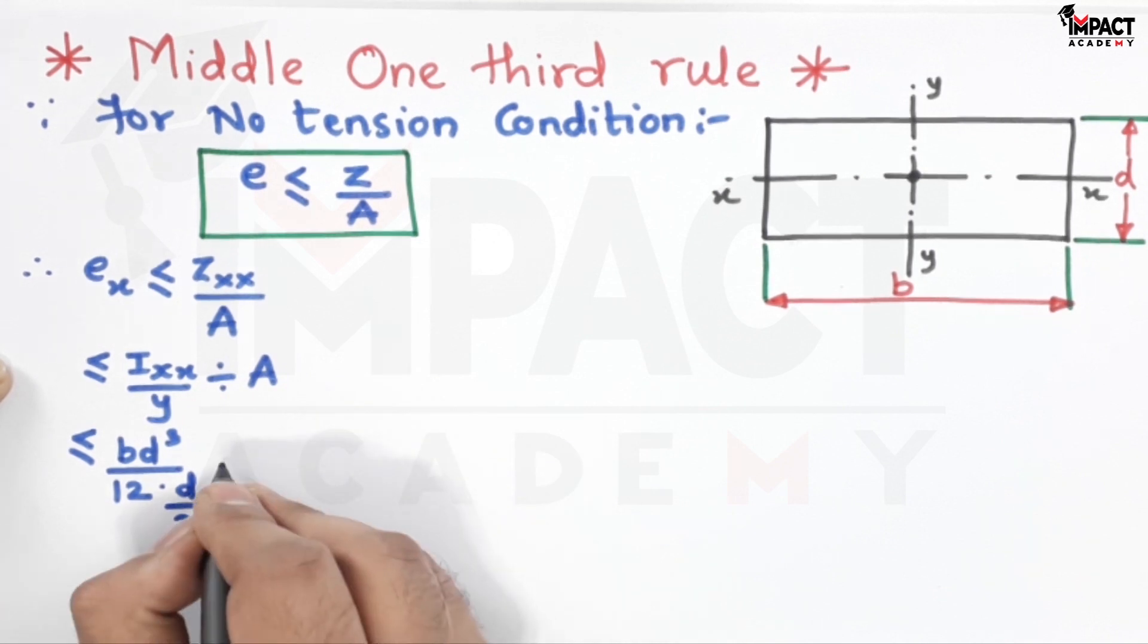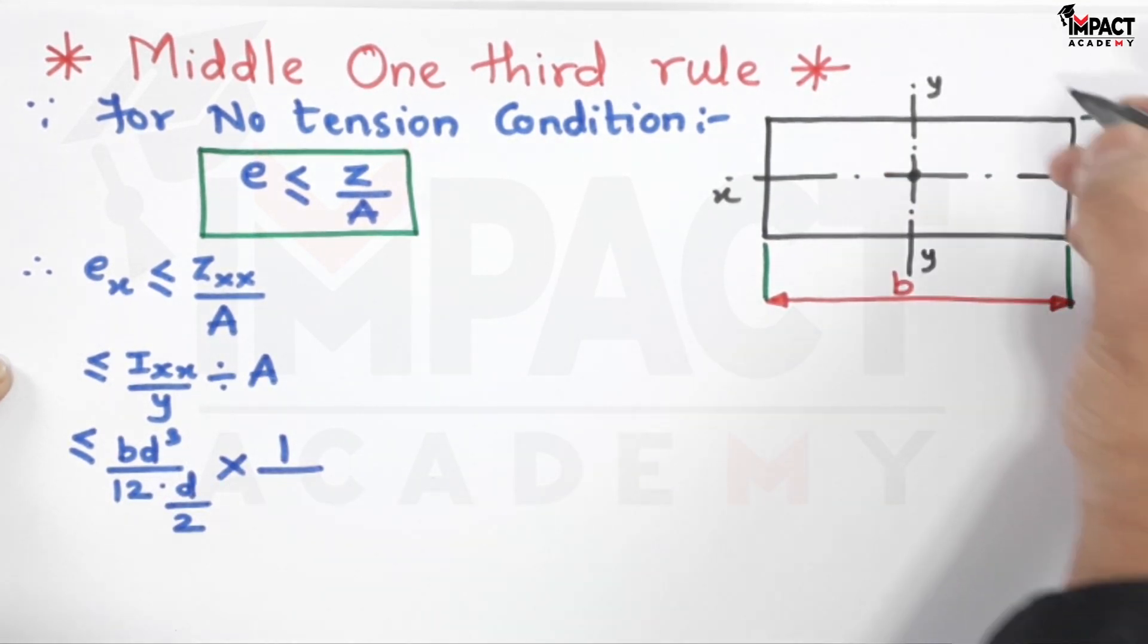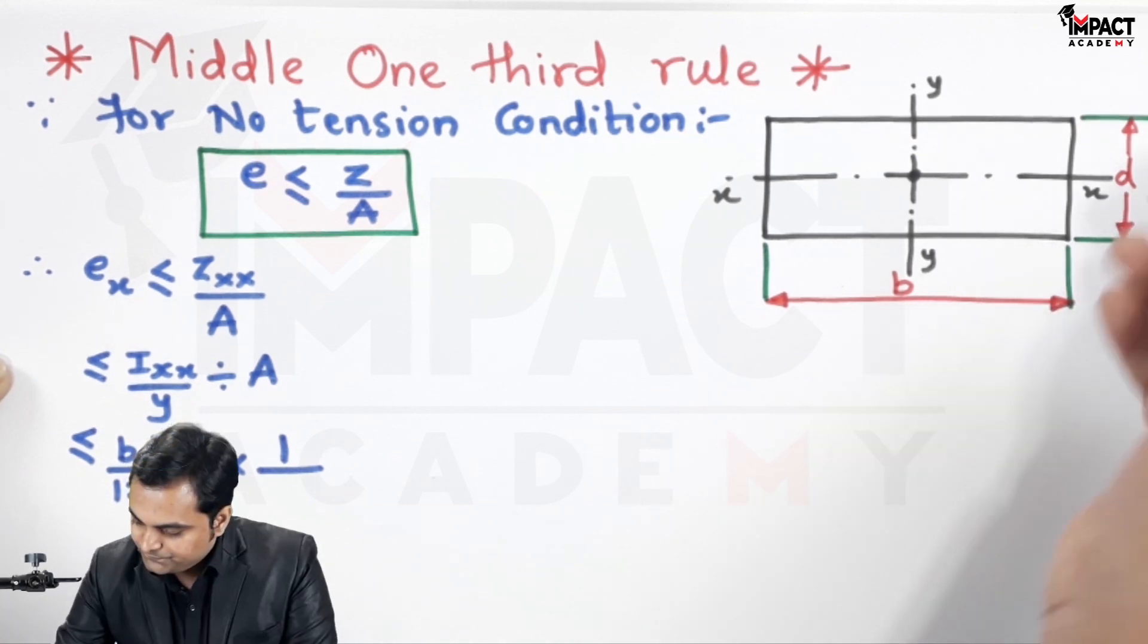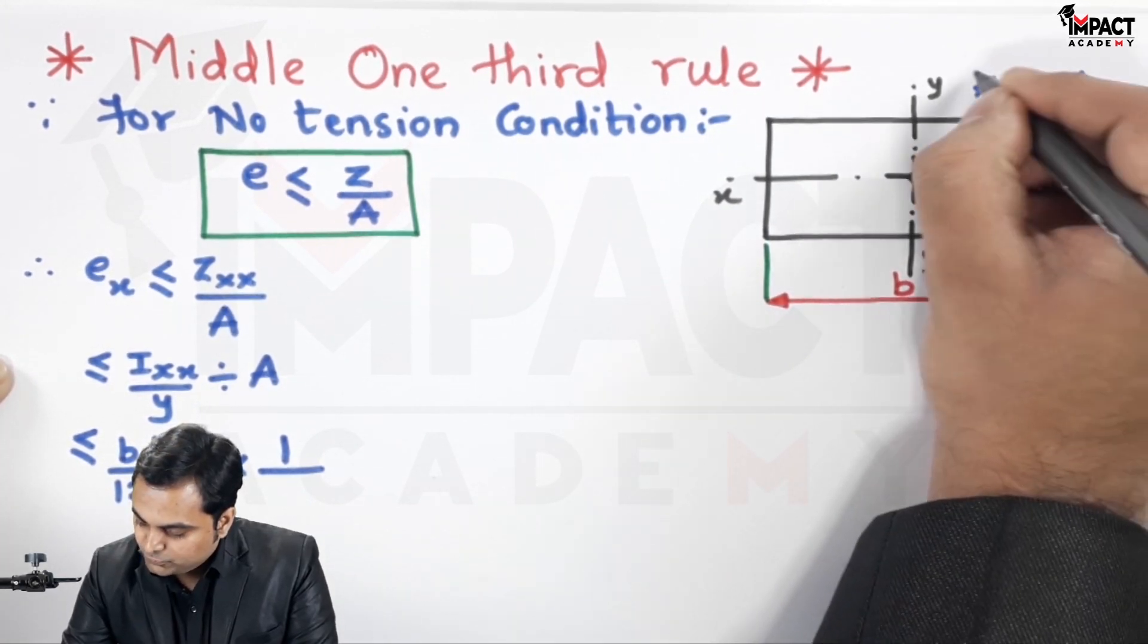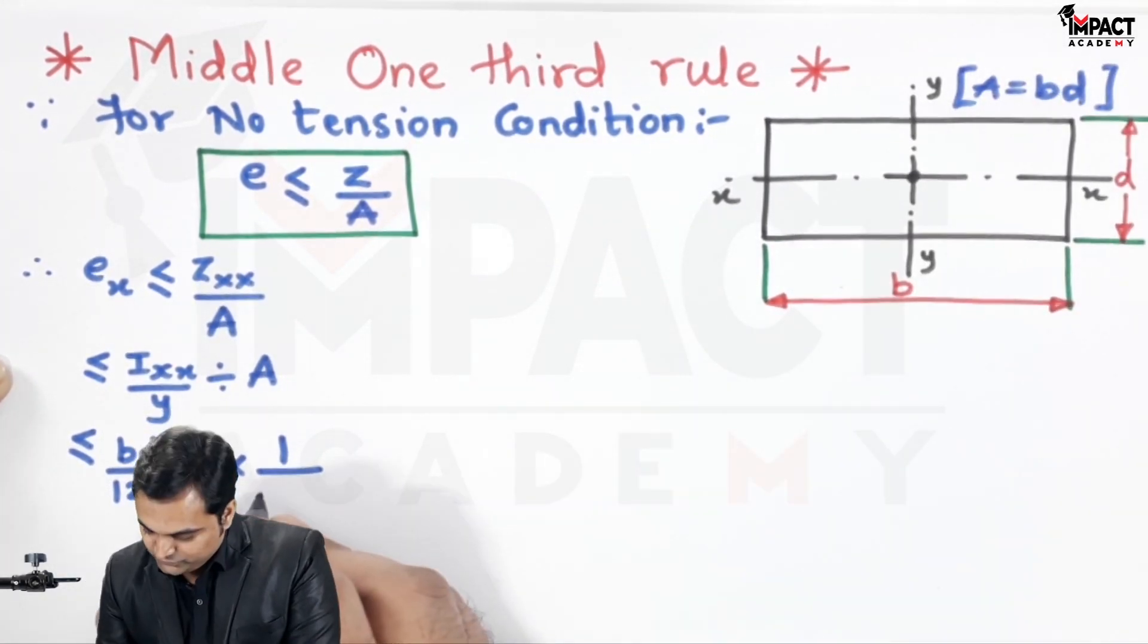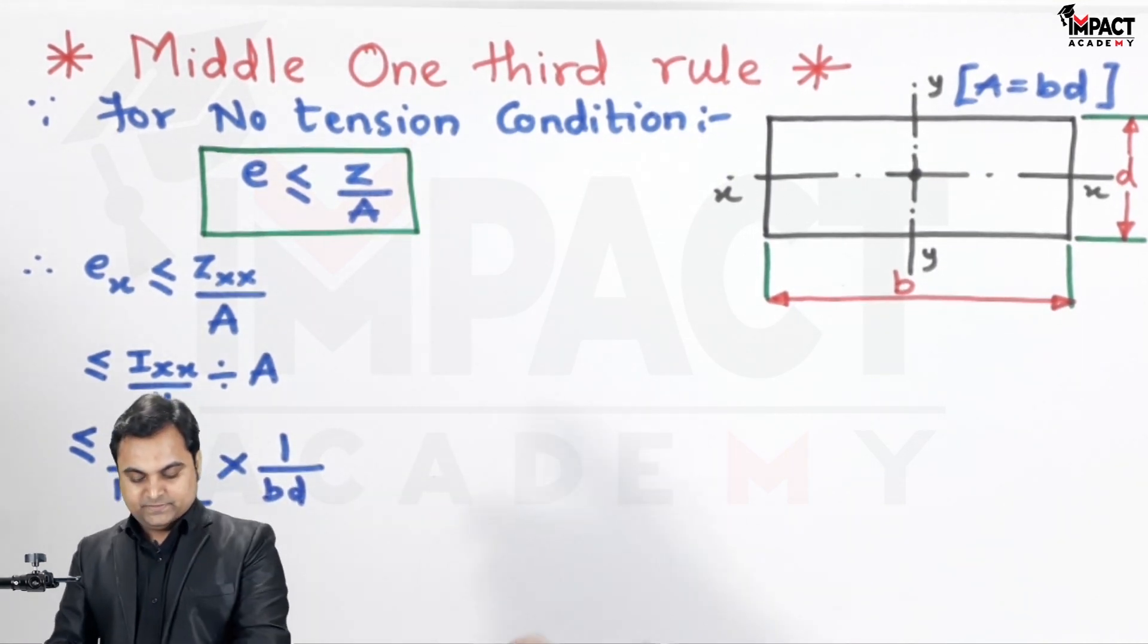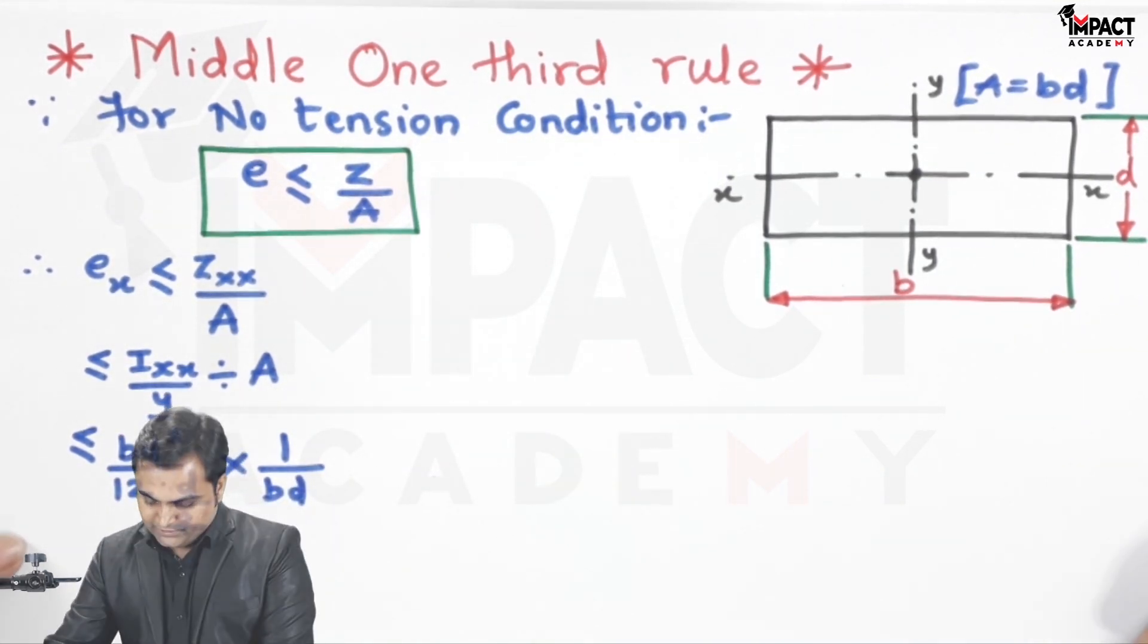Then divided by area, so that becomes if I take the reciprocal, multiplied by 1 upon area. And area for this rectangular section is b into d, so that is b into d.